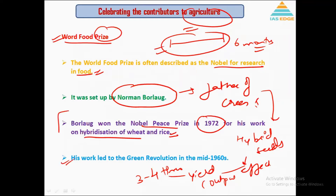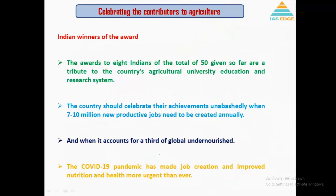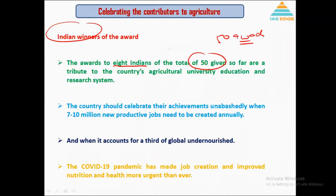Norman Borlaug brought the Green Revolution across the world. So far, 50 people have won the World Food Prize, and eight of them are Indians. The first Indian awardee discussed is Ratan Lal, awarded for developing and mainstreaming a soil-centric approach for food production. His approach restores and conserves natural resources, mitigates climate change, and focuses on healthy soils producing more crop per unit of land area.